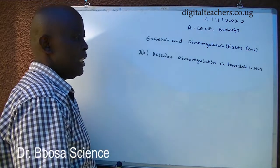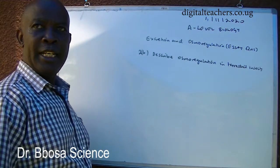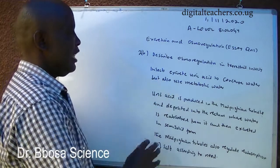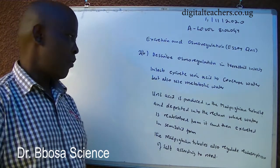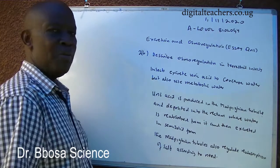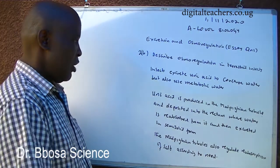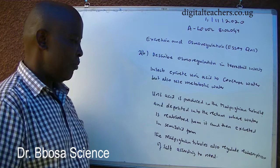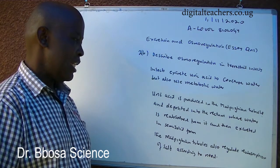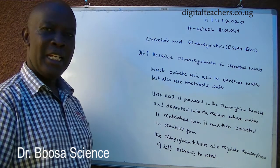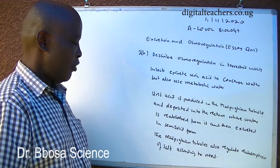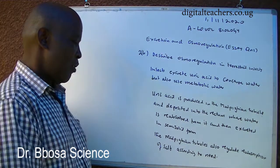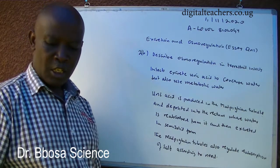Number 3: Describe osmoregulation in terrestrial insects. Insects excrete uric acid to conserve water, but also use metabolic water. Uric acid is produced in the Malpighian tubules and deposited into the rectum, where water is reabsorbed from it and then excreted in solid form. The Malpighian tubules also regulate reabsorption of salts according to need.